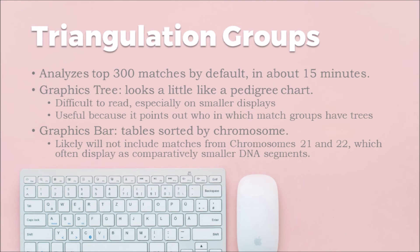Depending on how many matches you have, you may not see results for chromosomes 21 or 22. Those chromosomes are very small overall, so even a large segment off chromosome 21 or 22 might be around 20 centimorgans, which is comparatively small to your closer matches. Those matches appear further down in your match list, and you could run this analysis and have no matches from chromosomes 21 and 22 — which is the case for me.